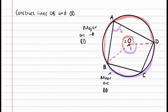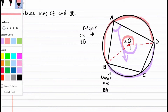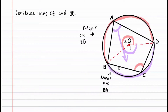Angle A at the circumference is right opposite arc BD. Angle A is created by lines AB and AD, so the arc supporting it is BD — specifically the minor arc, since A is right opposite it. Similarly, angle C is created by lines BC and DC, so arc BD supports angle C as well, and it's right opposite angle C.